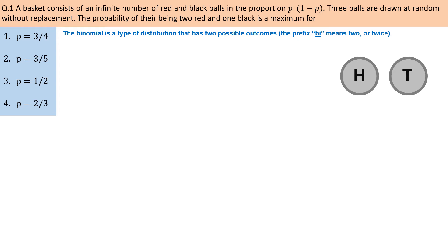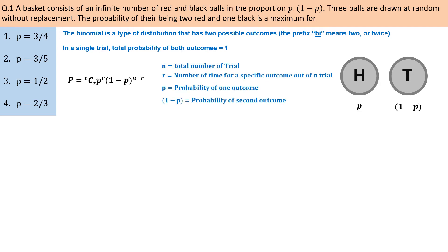According to binomial distribution, the total probability of both outcomes in a single trial will be 1. If one outcome has a probability p, the other will have a probability 1-p. The binomial distribution for n trials is given by a standard relation. Since the basket has an infinite number of balls with only two color outcomes, this problem can be solved with binomial distribution.